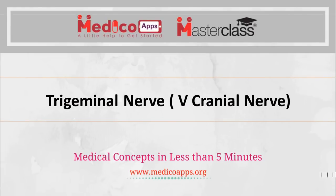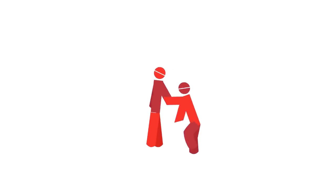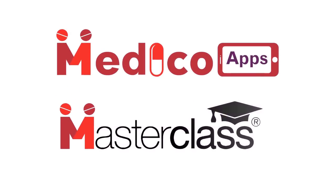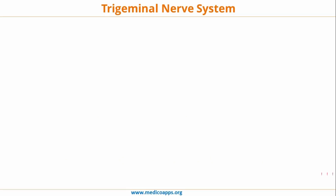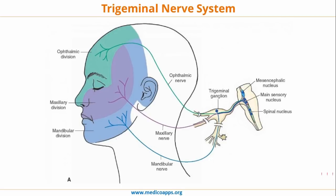In today's medical apps masterclass we will learn about the trigeminal nerve, or the fifth cranial nerve. The trigeminal nerve is a mixed cranial nerve, which means it will have both sensory nerve components as well as motor nerve components. We will look at the sensory nerve components first, and then the motor nerve components.